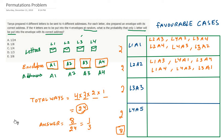Let's get into this permutations problem. The problem statement is: Tanya prepared four different letters to be sent to four different addresses. There are four letters L1, L2, L3, L4 which have to go to either A1, A2, A3, or A4. For each letter she prepared an envelope with its correct address. The four letters are to be put into the four envelopes at random. What is the probability that only one letter will be put into the envelope with its correct address?